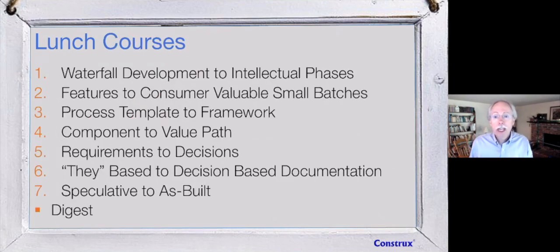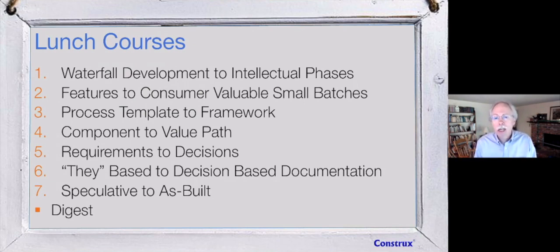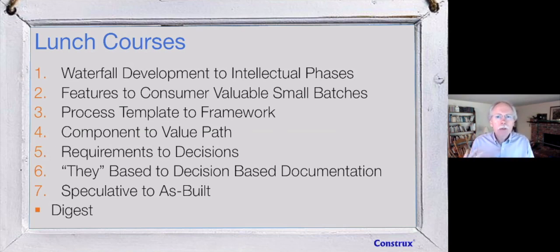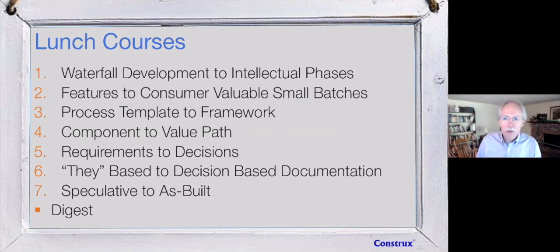So what's our agenda for today? We're going to go through seven gestalt shifts. They may not all be shifts you need to make personally — maybe you've already made some of them. But this gives you the idea of the kinds of things we have to shift through, going from thinking purely in waterfall because that's what the regulation seems to say, to how we actually capture evidence. I'll wrap this all up at the end. I'm thinking this will go about 40 minutes.